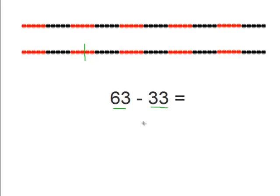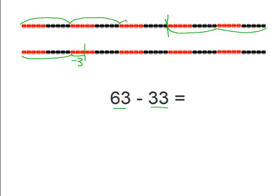And now we need to minus the thirty-three. So there's three right here, and then thirty more: ten, twenty, and thirty. So thirty is the answer. So sixty-three minus thirty-three equals thirty.